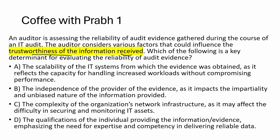Option A: scalability of the IT system from which evidence was obtained — not relevant to trustworthiness. Option B: independence of the provider of the evidence, as it impacts the impartiality and unbiased nature of information — makes sense. Option C: complexity of the organization's network infrastructure — does not relate to the question. Option D: qualification of the individual providing the evidence — emphasizes expertise. We eliminate A and C, leaving B and D.